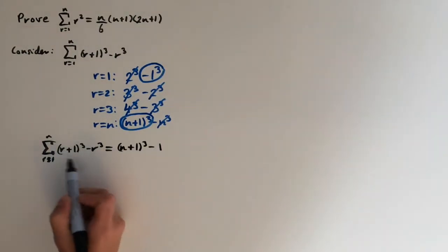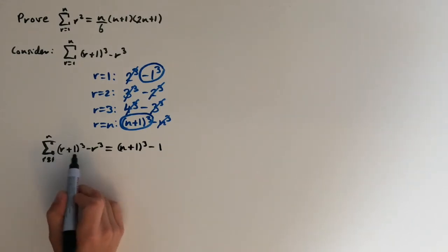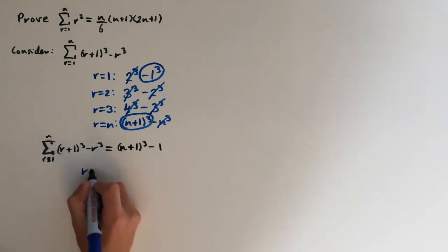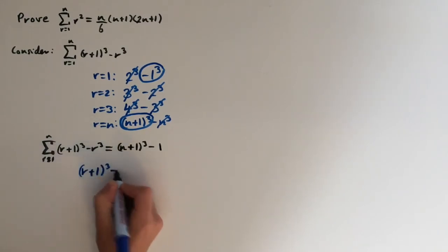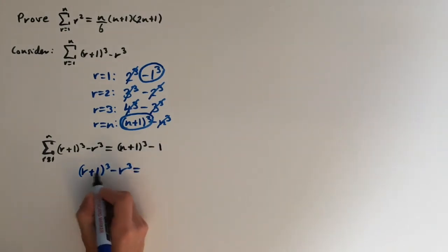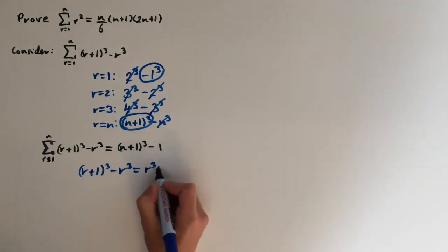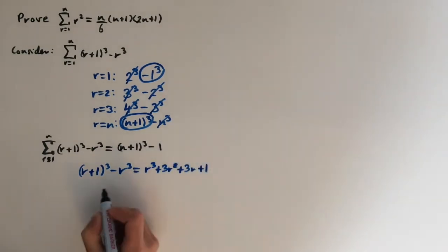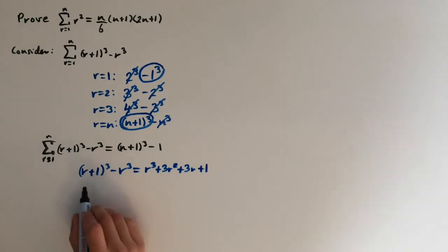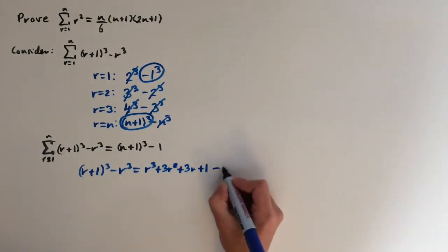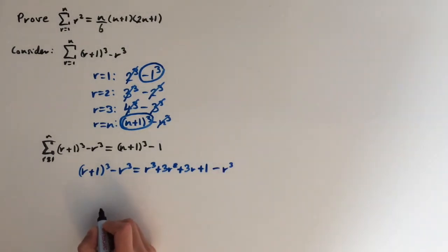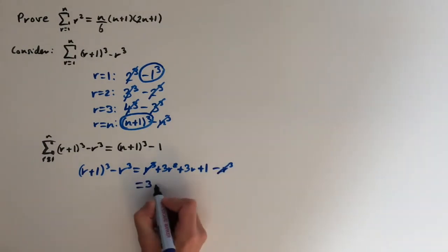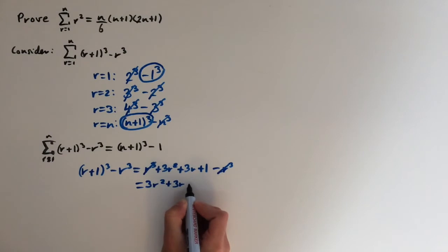Now I want to express the left-hand side as something else, so we're going to expand the brackets. Looking at r plus 1 cubed minus r cubed: the brackets expand as r cubed plus 3r squared plus 3r plus 1, and then we've got the minus r cubed at the end. The r cubed terms cancel out, and this equals 3r squared plus 3r plus 1.